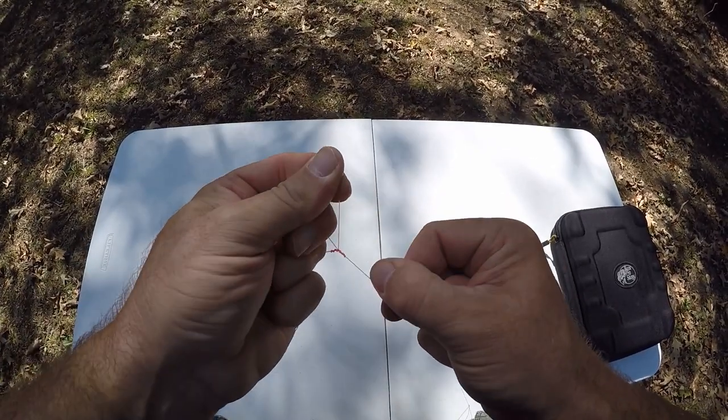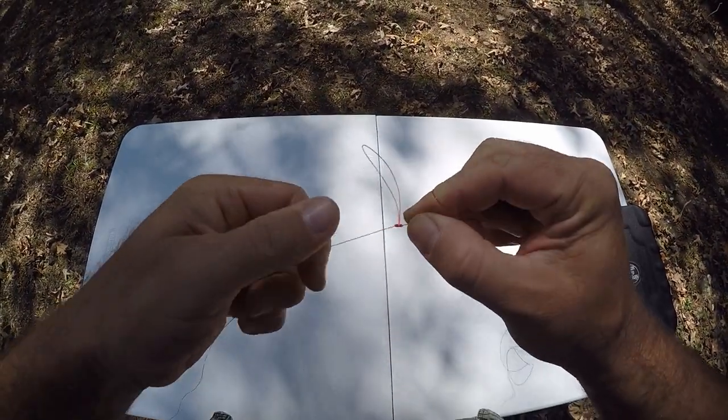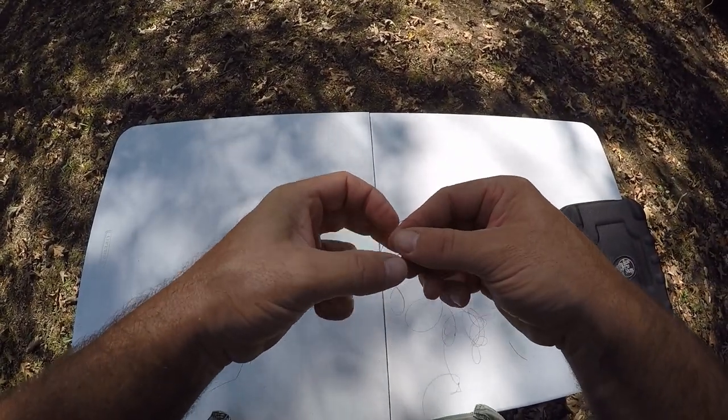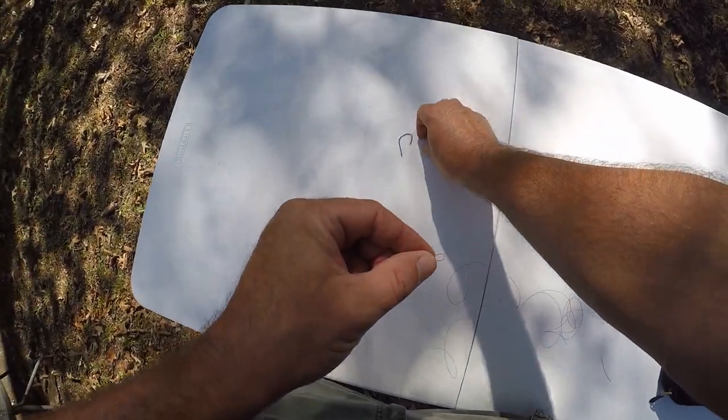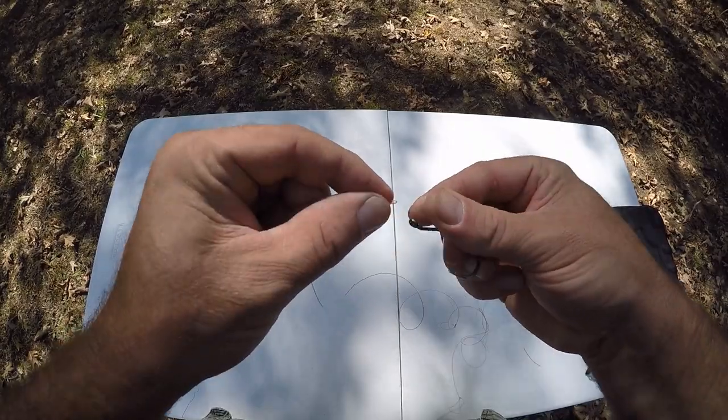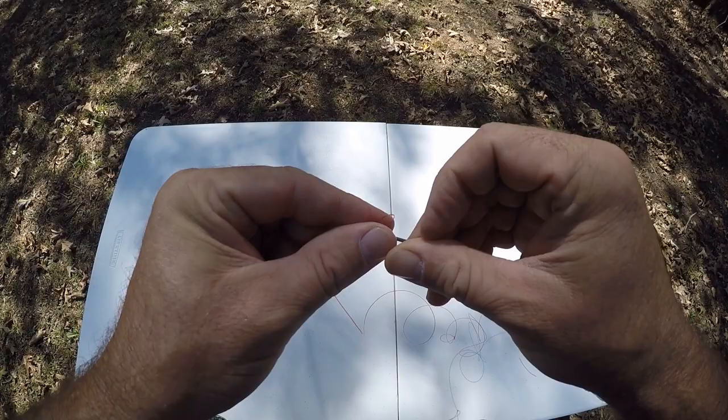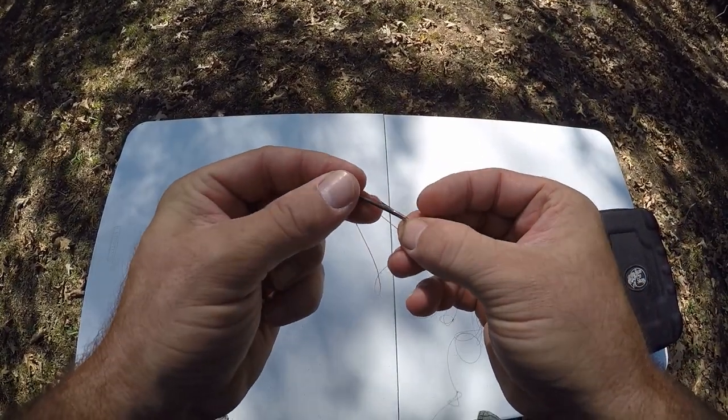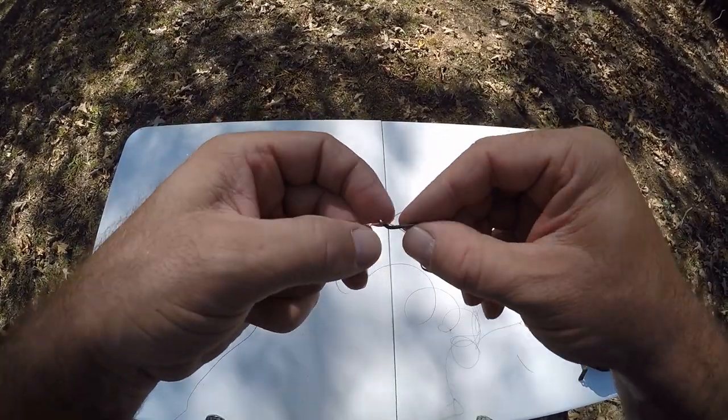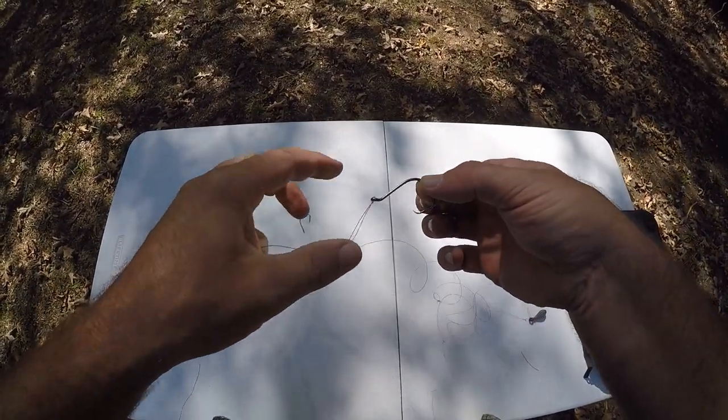And you really should wet this. There we go, the other loop knot that we're going to put our hooks on. Now I always go through the front of the eye. Some knots it's not necessary, but some it is. Or any of the knots I use anyway. So just to be on the safe side, I just go through the front all the time.